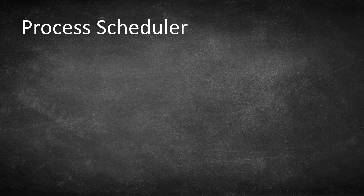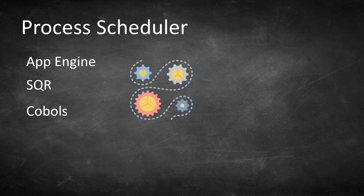Let's move on to the last part of this episode: bouncing the process scheduler server. The process scheduler server is also known as the batch server — it is where many batch programs run, such as app engine programs, SQL, COBOL, etc. It can be installed as a standalone server or on the same machine as the app and database servers. The process scheduler maintains its own cache storing copies of batch programs that are frequently executed. If your batch program is running on old code, now you know what the problem might be. Let me quickly show you where the process scheduler cache resides, then I'll show you how to bring it down, delete cache, and restart it.